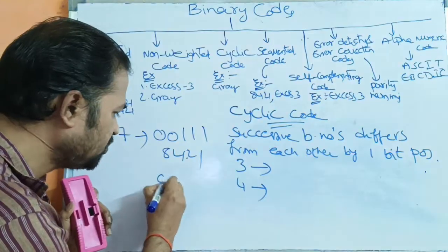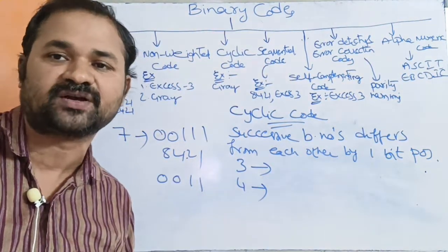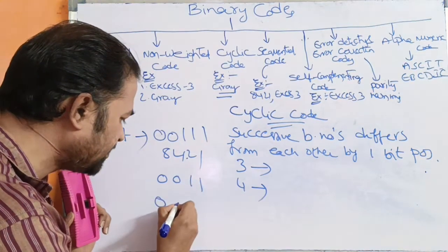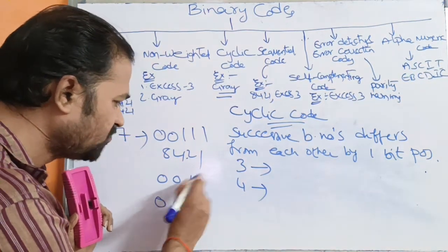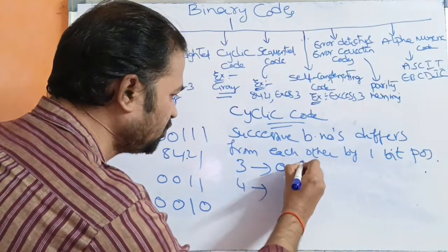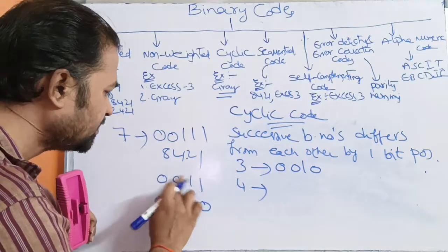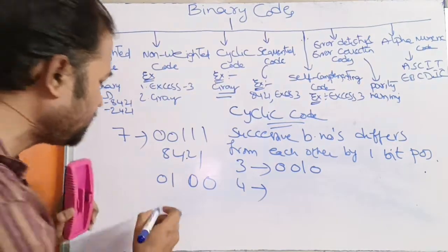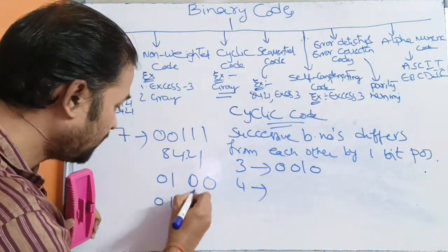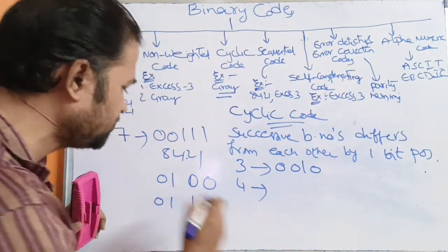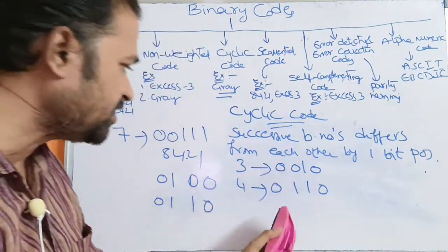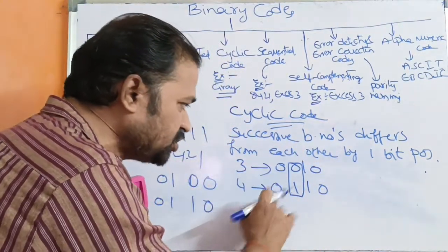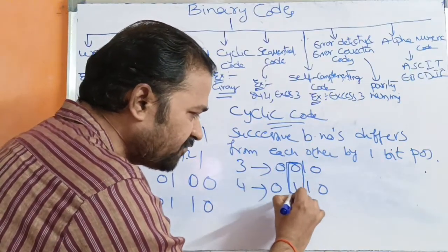We have to convert 3 to grey code. Keep the first bit as 0. Then 0 XOR 0 means 0, 0 XOR 1 means 1, and 1 XOR 1 means 0. So 3 in grey code means 0 0 1 0. Next, 4 in binary notation means 0 1 0 0. Converting to grey code: keep 0 as is. Then 0 XOR 1 means 1, 1 XOR 0 means 1, and 0 XOR 0 means 0. So 4 in grey code is 0 1 1 0. If we observe these two grey codes, they differ by only one bit position — the remaining bits are the same.